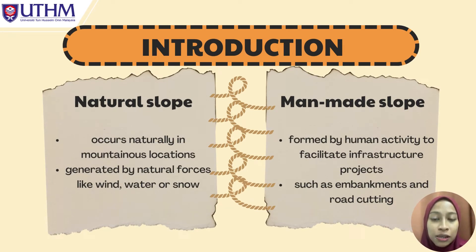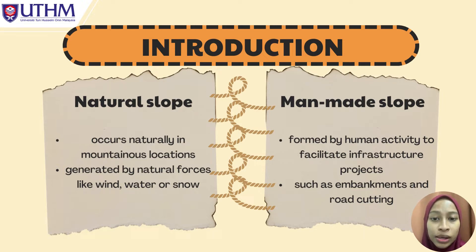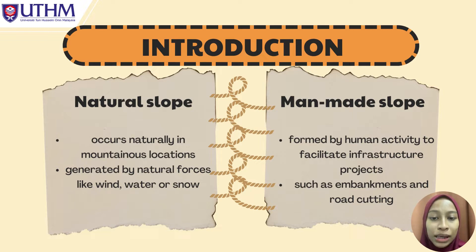A slope can be defined as the mass of soil surface which is inclined to horizontal. Slopes can be categorized into two types: natural slope and man-made slope. The natural slope occurs naturally in mountainous locations and is generated by natural forces such as wind, water, or snow. The man-made slope is formed by human activity to facilitate infrastructure projects such as embankments and road cutting.